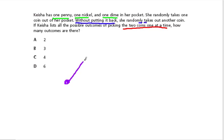On your first pick, you can pick out a penny, a nickel, or a dime. If you picked a penny, there's no more penny in the pocket - you can get a nickel or a dime. So there's two possibilities right there.